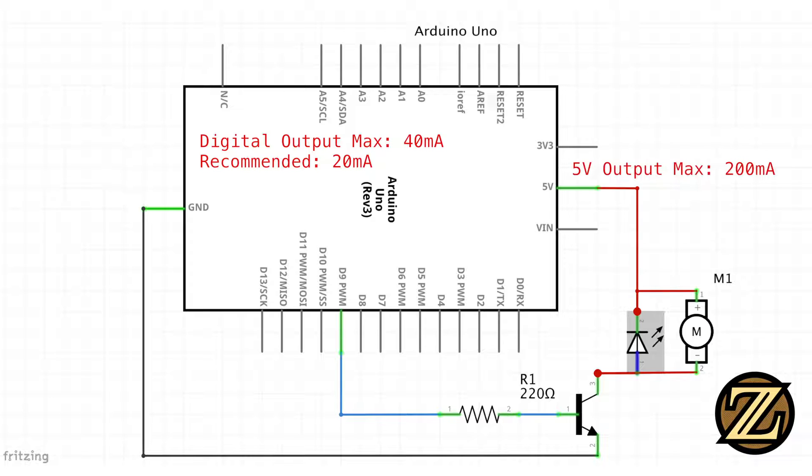The 5 volt rail can deliver up to 200 milliamps which is alright for a very small motor. If your motor requires a larger current draw you will need to supply a secondary source of power. The transistor I'm using is a 2N3904. Any similar NPN BJT will work.